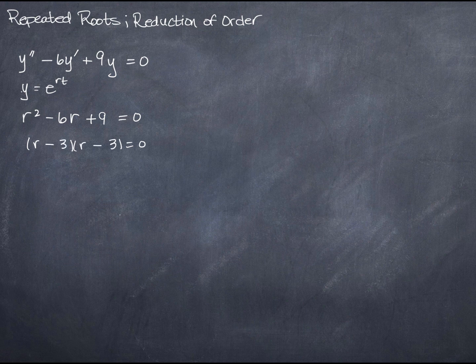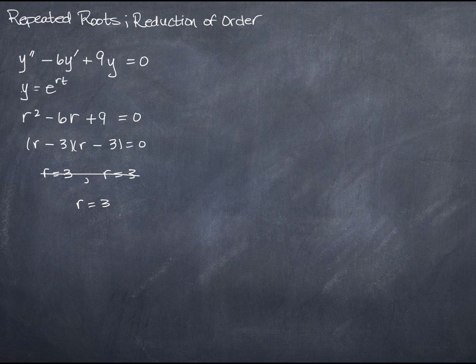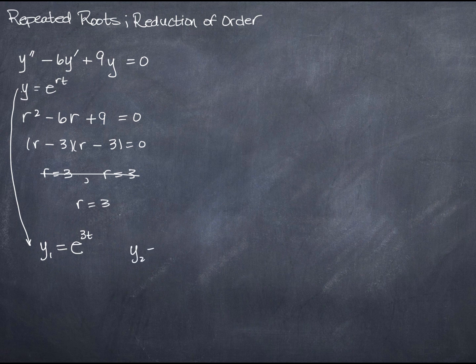Let's look at this second-order homogeneous differential equation with constant coefficients. The strategy we know will work at least at the beginning. We recall that we're looking for solutions of the form e to the rt, and we create a characteristic equation which we can solve by the quadratic formula or by factoring. We find r equals three and r equals three — that is the only solution. So y1 equals e to the 3t. But what's y2?